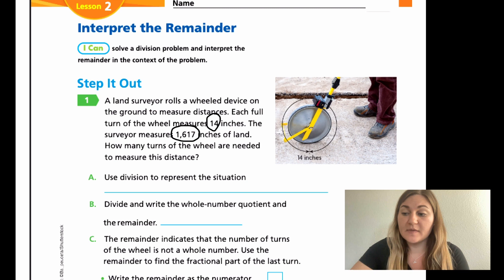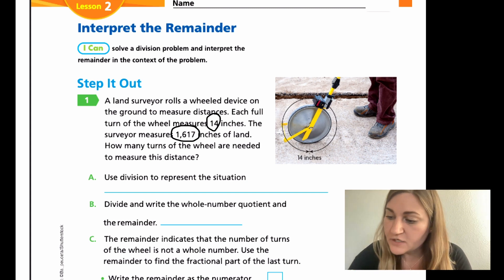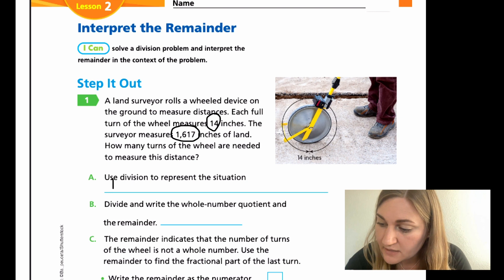The surveyor is measuring 1,617 inches by spinning a wheel on the ground, and each turn of that wheel has 14 inches. We're trying to figure out how many times the wheel is going to spin. Part A says use the division to represent the situation. So we're going to take that total amount of inches, 1,617, and we are going to divide it by 14.